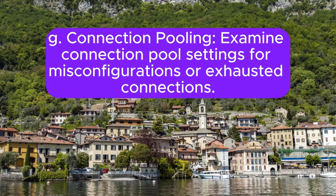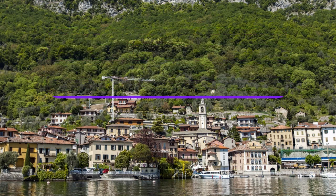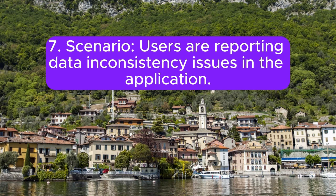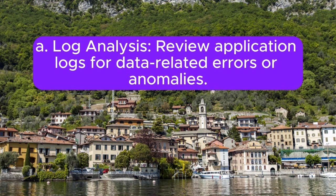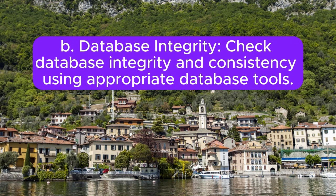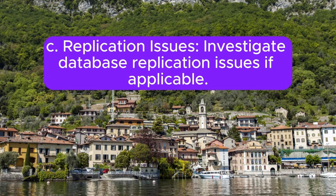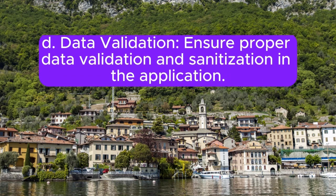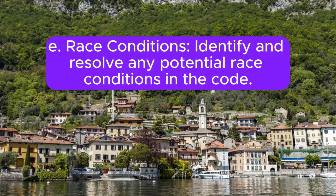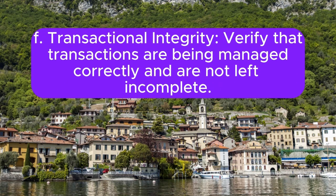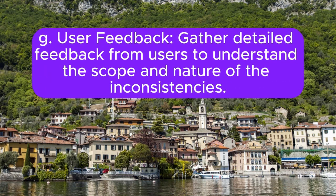G. Connection pooling — examine connection pool settings for misconfigurations or exhausted connections. Scenario 7: Users are reporting data inconsistency issues in the application. How would you handle this? Answer: A. Log analysis — review application logs for data-related errors or anomalies. B. Database integrity — check database integrity and consistency using appropriate database tools. C. Replication issues — investigate database replication issues if applicable. D. Data validation — ensure proper data validation and sanitization in the application. E. Race conditions — identify and resolve any potential race conditions in the code. F. Transactional integrity — verify that transactions are being managed correctly and are not left incomplete. G. User feedback — gather detailed feedback from users to understand the scope and nature of the inconsistencies.